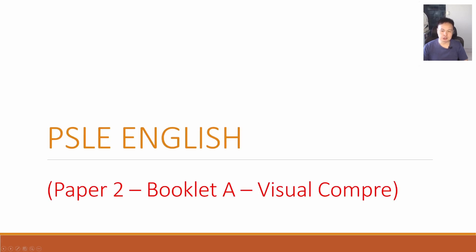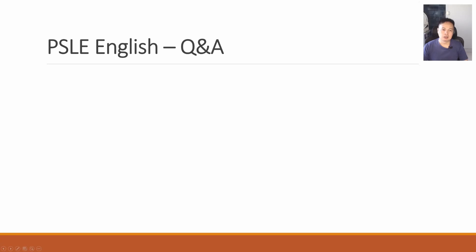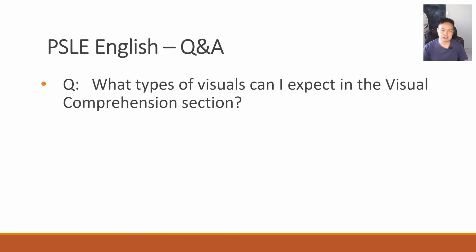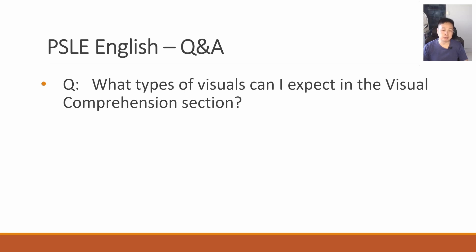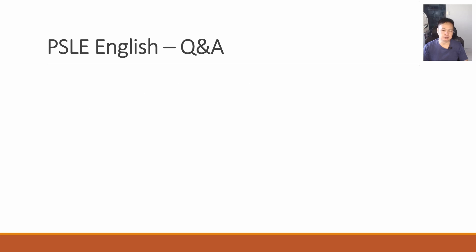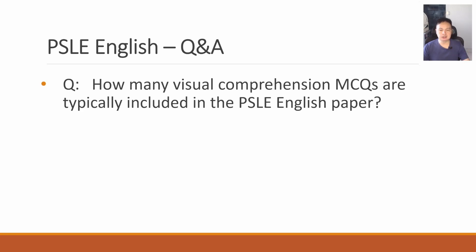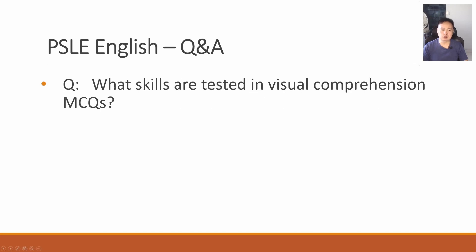Next, let's move on to visual comprehension — the last part of Booklet A. What types of visuals can I expect? This can be a variety — it can be a map, charts, or a board game. It's almost impossible to predict what visual will come out, but these are some of the common types. How many visual comprehension MCQs are there? A total of 8 marks only. The skills tested are mostly reading skills, since you only need to choose the correct answer. Make sure you understand the question and the information presented in the visual, which includes both images and text.